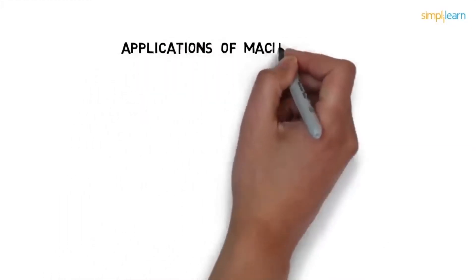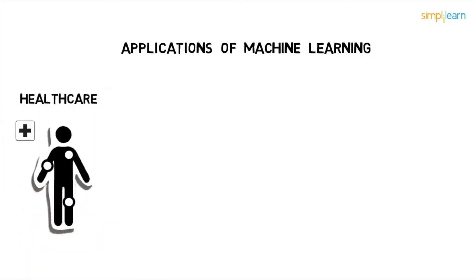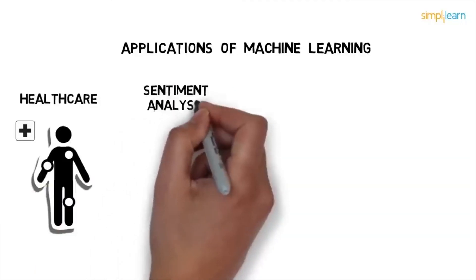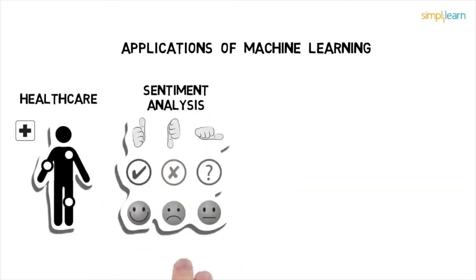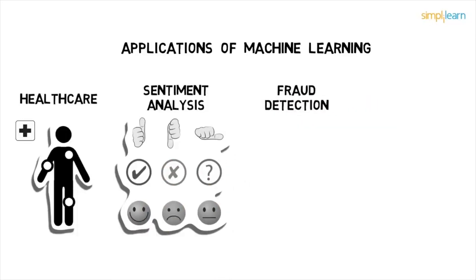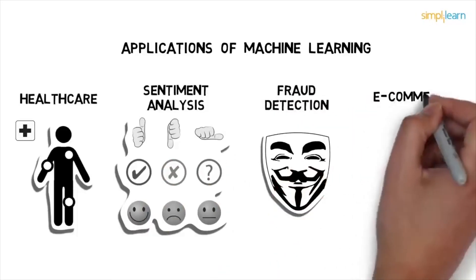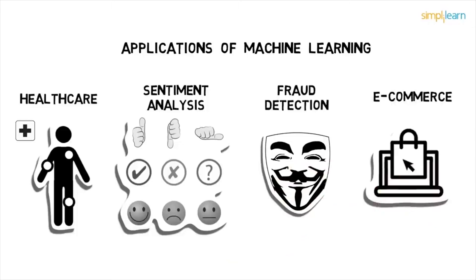So there are a lot of applications of machine learning out there. To name a few, machine learning is used in healthcare where diagnostics are predicted for doctor's review. The sentiment analysis that the tech giants are doing on social media is another interesting application of machine learning, fraud detection in the finance sector, and also to predict customer churn in the e-commerce sector.